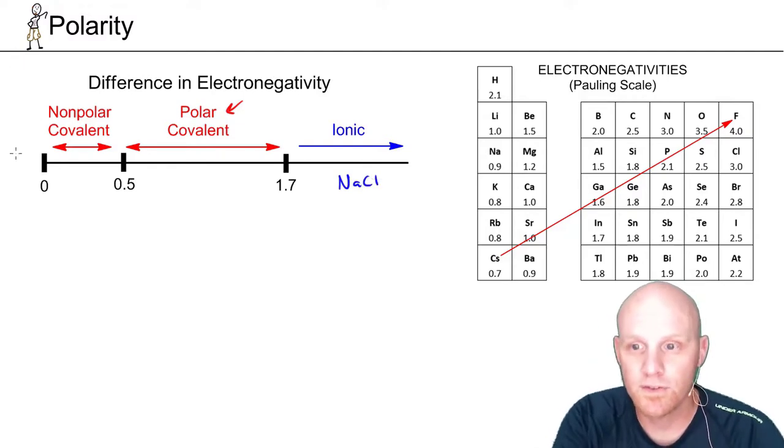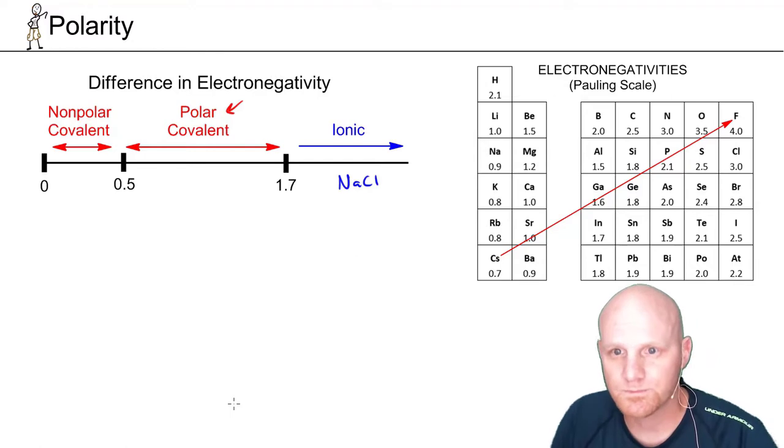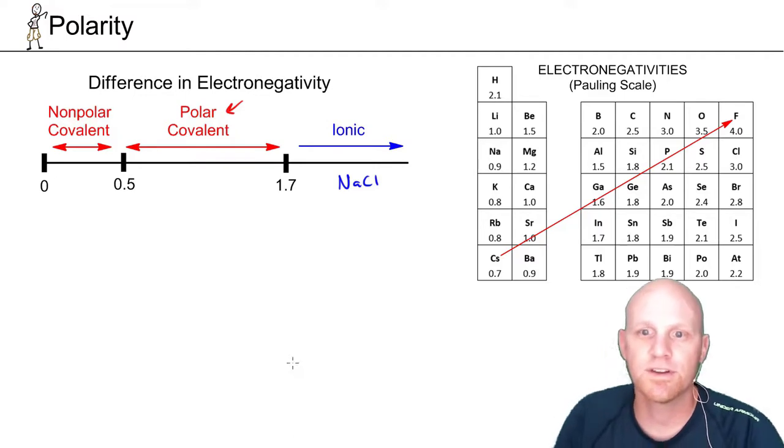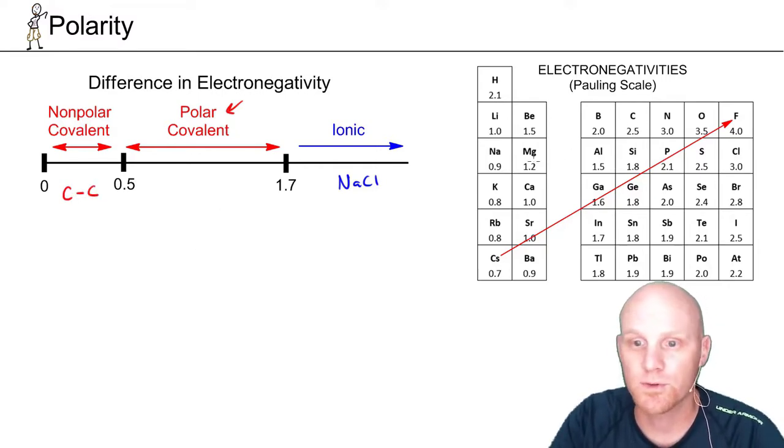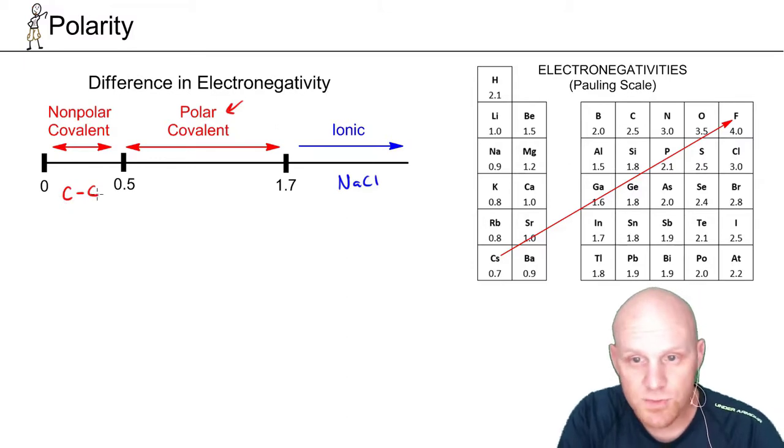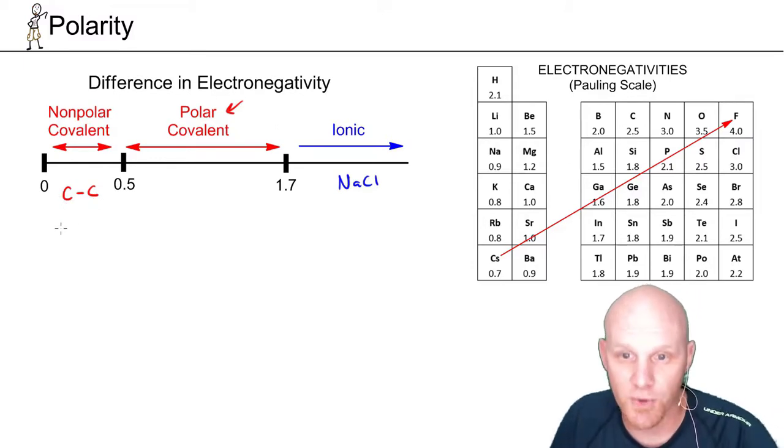And if you've got two non-metals, that's going to be covalent. It turns out we want to get a little more stringent with our definition here. So if the difference in electronegativity between two atoms is less than 0.5, like if you've got two identical atoms, like a carbon-carbon bond, carbon's got electronegativity here on the Pauling scale of 2.5, and 2.5 versus 2.5 obviously is a difference of zero, and that is definitely a non-polar covalent bond.